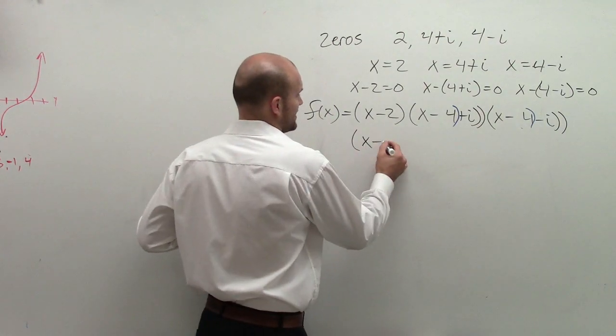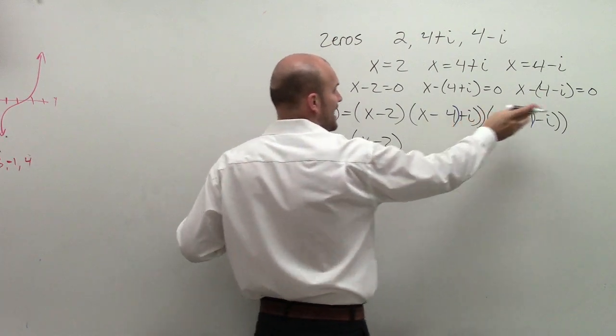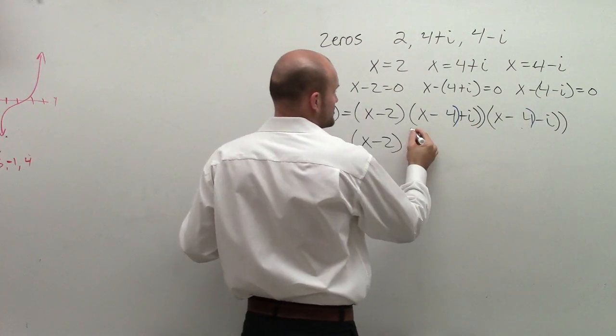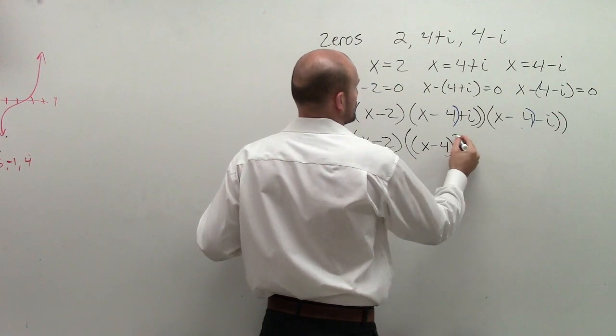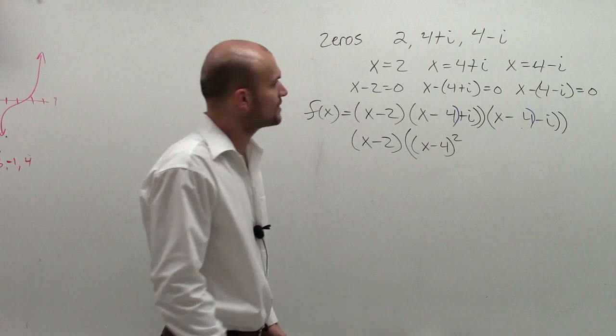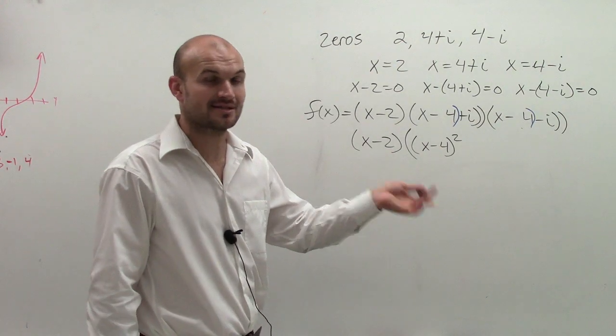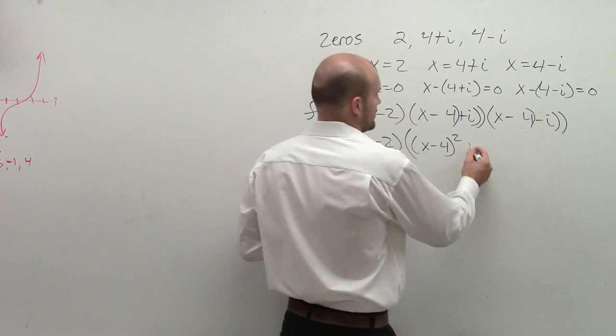So without multiplying the x minus 2, what I notice is x minus 4 is the same as x minus 4, and then I have i and i with a positive and negative. So that gives me x minus 4 squared, when I complete difference of two squares, minus i squared, which is negative 1. So minus the negative 1 is going to be plus 1.